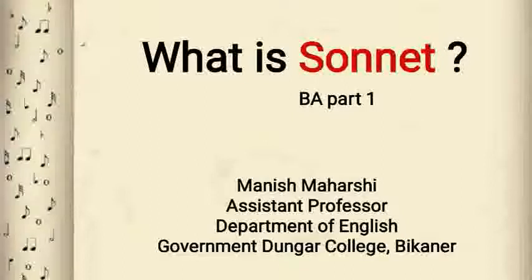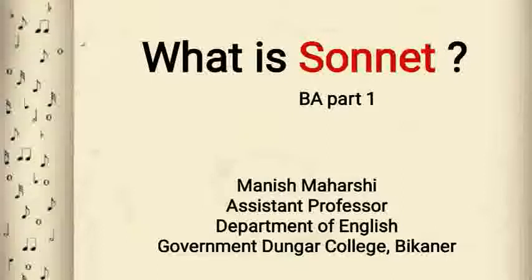From its brilliant use by Petrarch, the Italian sonnet is named after him as the Petrarchan sonnet. There are two parts in a Petrarchan sonnet: the first part is known as the octave and the second part is known as the sestet. The octave is eight lines and the sestet is six lines, forming 14 lines in total. The rhyme scheme of a Petrarchan sonnet is: ABBA ABBA CDC CDC (or variations like CDECDE).